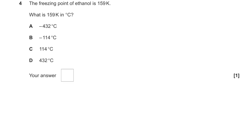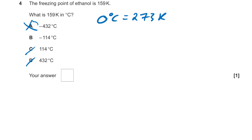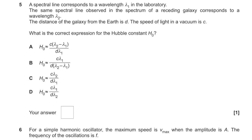Question 4: the freezing point of ethanol is 159 K. What is it in degrees Celsius? We know 0°C is 273 K, so it must be less than 0°C — can't be C or D. It certainly can't be A because that's below absolute zero. Without any maths, the answer has to be B.